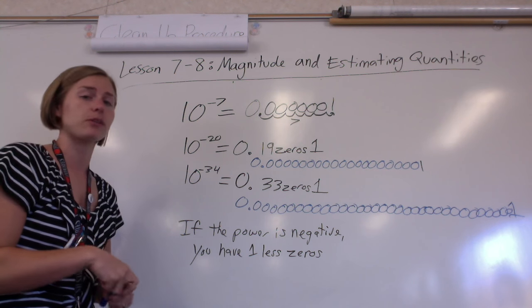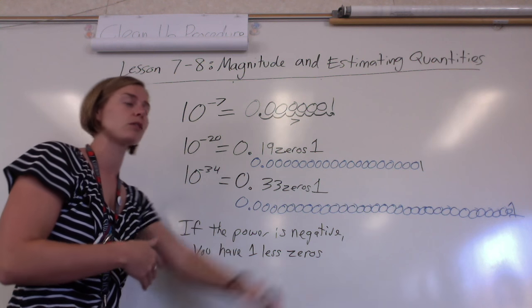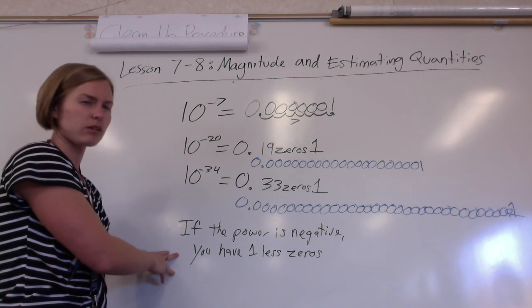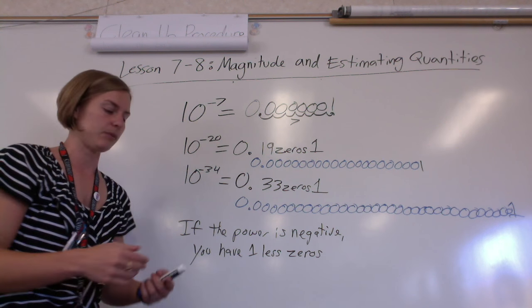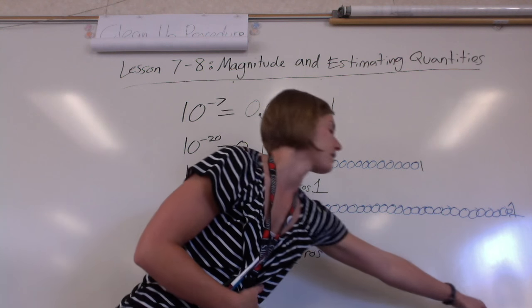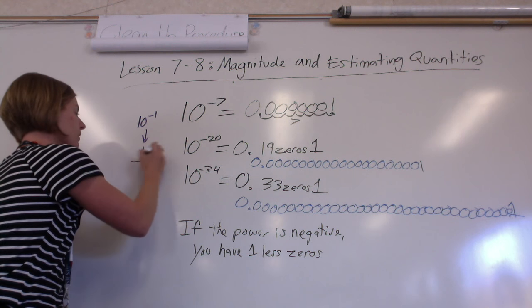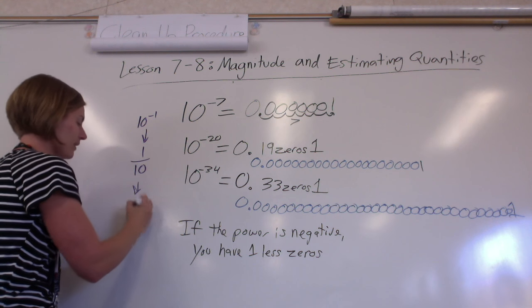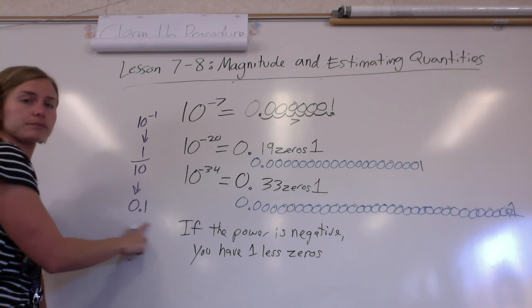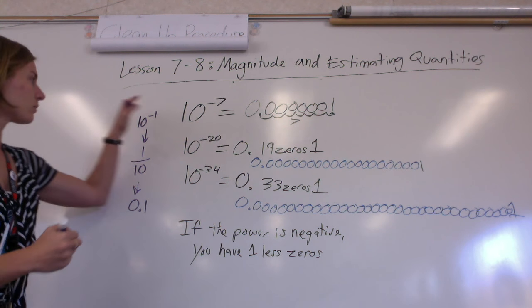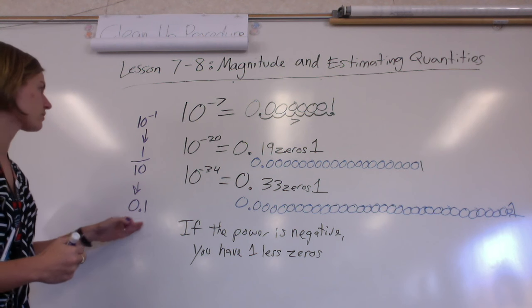You can always do it the long way — putting one over that many tens, multiplying it out, changing it over to a decimal — but knowing this rule will help a lot. And if you forget this rule, you can always look at really small examples to help you remember. We all know 10 to a negative 1 is 1 over 10, and we all know that is 0.1. One less than one is zero, so there are no zeros here.